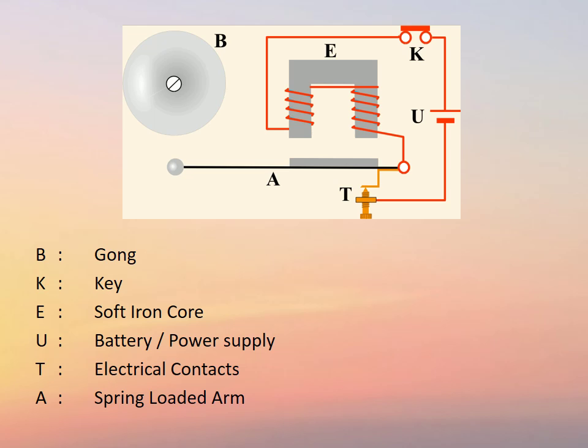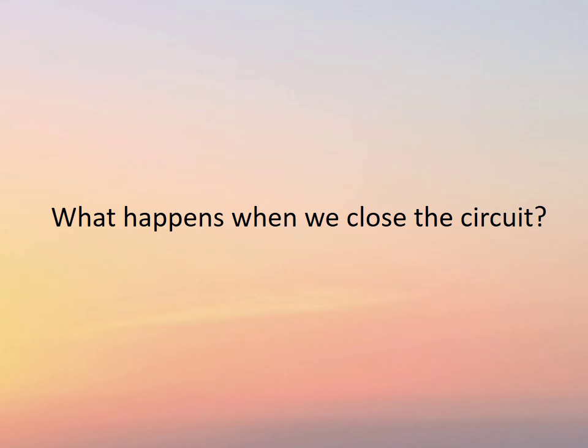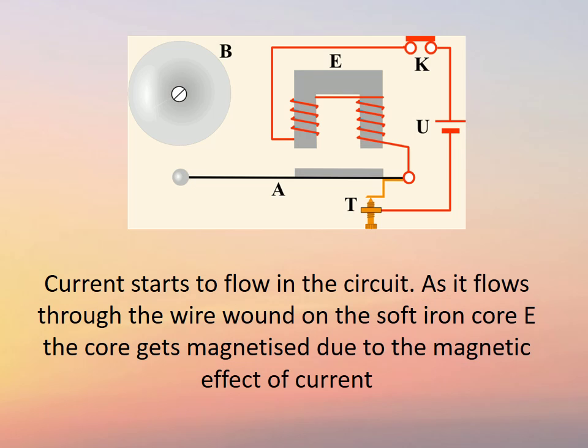E is the soft iron core, U is the battery or the power supply, T are the electrical contacts, and A is the spring loaded arm. But what happens exactly when we close the circuit?